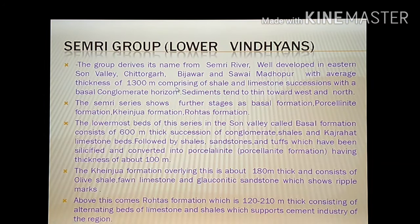The Semri Group of the lower Vindhyan derives its name from the Semri River and is well exposed in the eastern Son Valley, Chittorgarh, Pejavar, and Sawai Madhopur, with an average thickness of about 1,300 meters. It comprises shale and limestone successions with a basal conglomeratic horizon. Sediments tend to thin towards the west and north. The Semri series shows further stages: basal formation, porcelainite formation, Khenjwa formation, and Rotas formation.